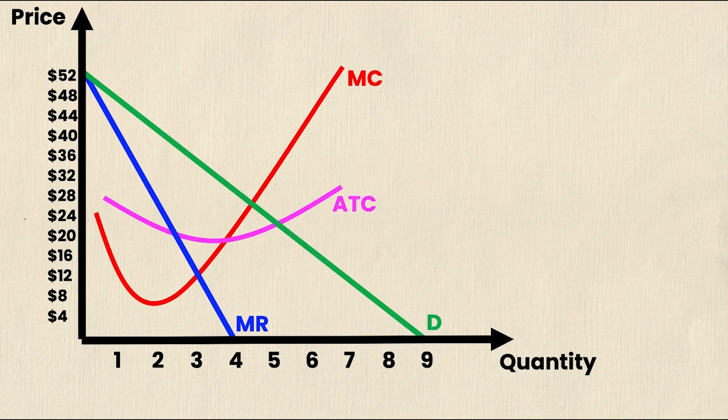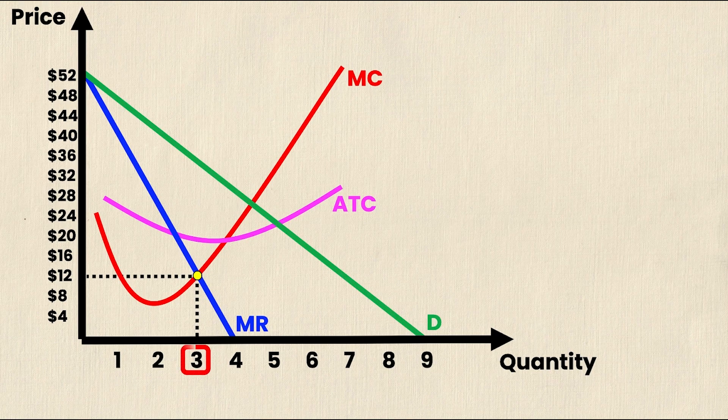So similar to in perfect competition, a monopolist can actually maximize their profit by selecting a quantity where marginal revenue and marginal cost intersect. So as you can see on this particular graph, that's at a point of a quantity of 3 and a price of $12.